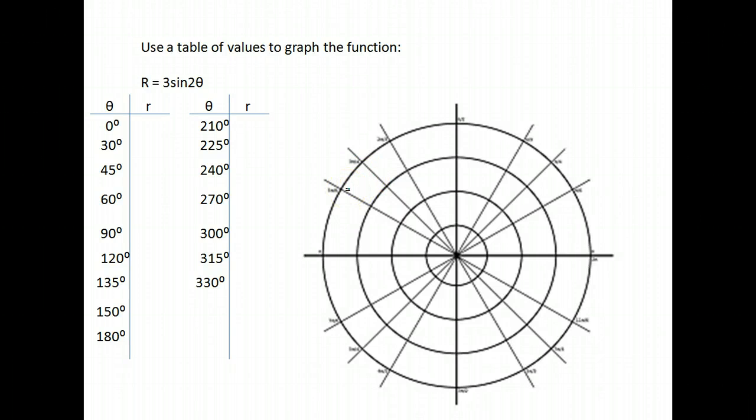So here we're going to graph R equals 3 sine 2 theta. Now notice this will make a difference because we have not only the multiplying by 3 here, but we also have 2 times our angle. And we may find that we need to put in more values here, smaller values, because when we're multiplying them by 2, it's taking out some of those.